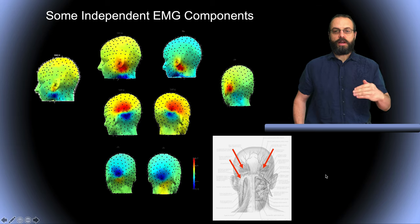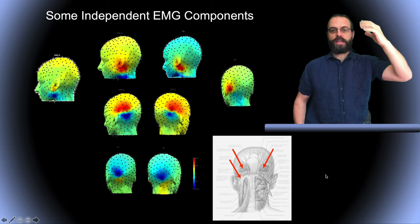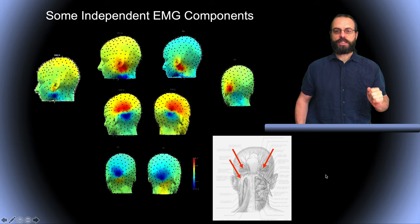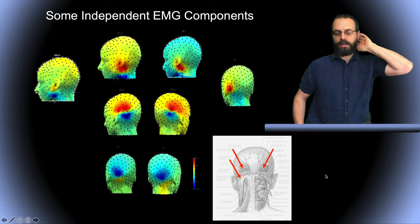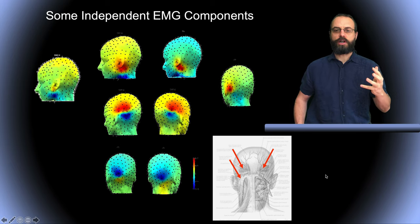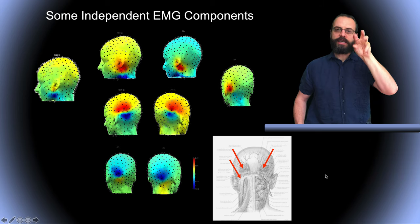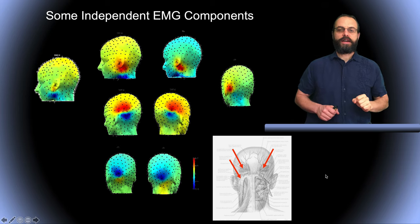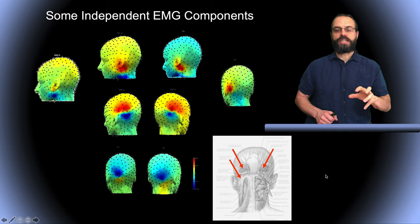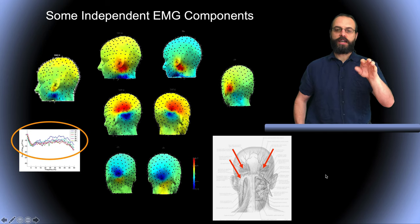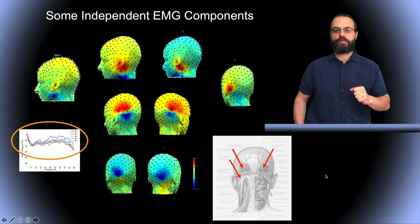Here is another example of ICA applied to EEG time series. This was a 256-channel montage and the subject was moving their head a little during the experiment. When we applied ICA we had all these components in the back of the head, and these components actually correspond to the insertion points of muscles on the back of the head. So ICA was able to isolate individual muscle groups, and these components show very high frequency activity typical of muscle components.